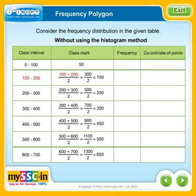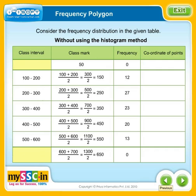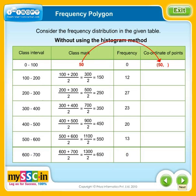Find the class mark for every class interval. Find the class mark of the class interval just before the first and just after the last class interval, and mark the corresponding frequency as 0. Then identify the coordinates of the midpoints as the pair: class mark and frequency.